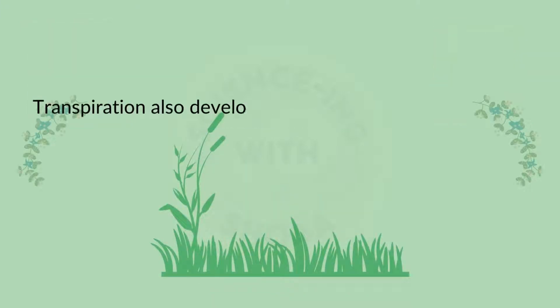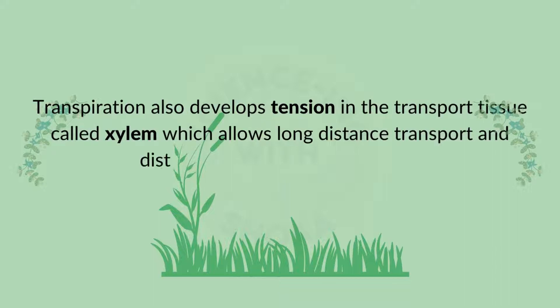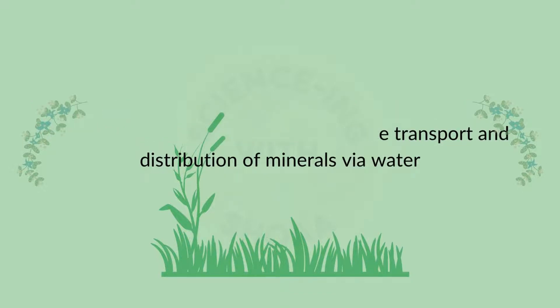Other than cooling of the plant, transpiration also develops tension in the transport tissue called xylem, which allows long distance transport and distribution of minerals via water.